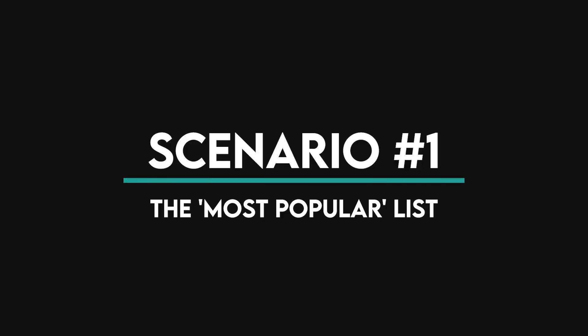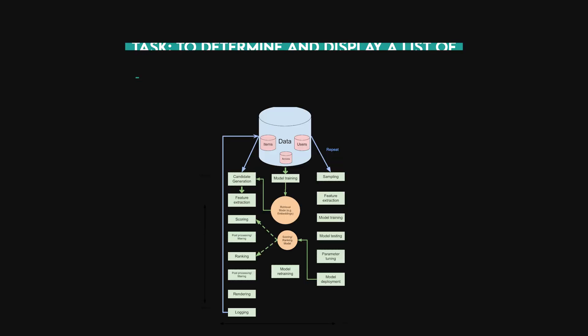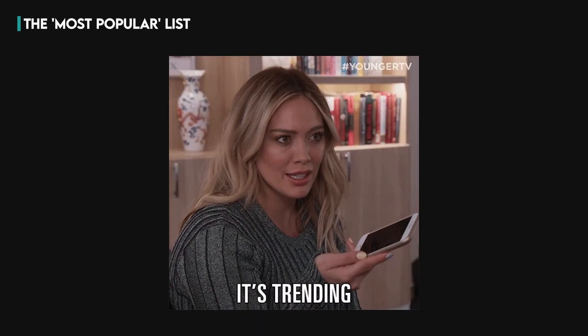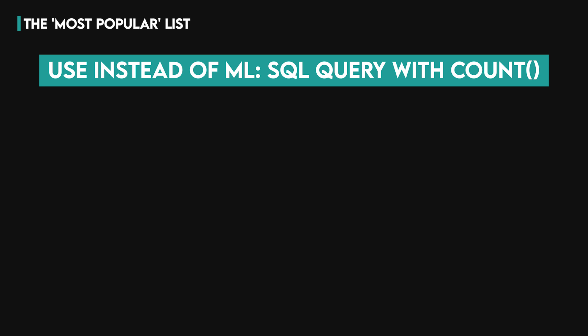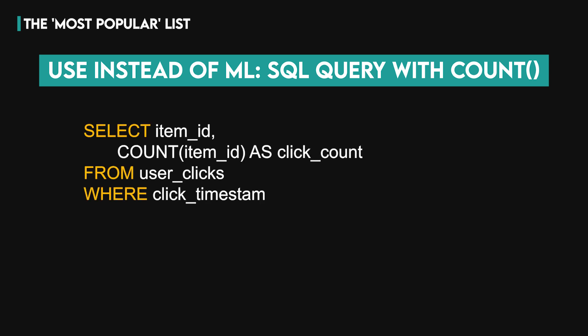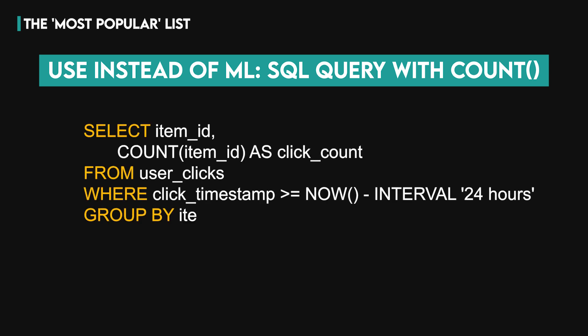Let's start with a common feature: the most popular list. You could spend weeks building a complex personalization engine, complete with feature stores and training pipelines, just to battle inference latency for a real-time result. But what if you just need to show what's trending right now? The answer is often a simple SQL query — a count of clicks over the last 24 hours.